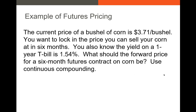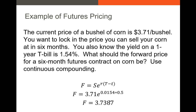Let's take a look at a basic example. The current price of a bushel of corn is $3.71 per bushel. You want to lock in the price you can sell your corn at in six months — similar to the farmer example from an earlier video. The yield on a one-year T-bill is 1.54%. What should the forward price for a six-month futures contract on corn be? Using continuous compounding: our spot price is $3.71, our interest rate is 1.54%, and six months to maturity is 0.5 years. The forward price works out to approximately $3.7428. We typically write this out to four decimal places, as these numbers get very granular.